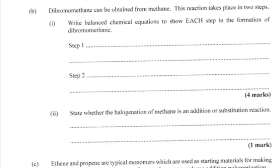We're at part B of number five, the organic chemistry section. The compound is dibromomethane — key thing here: 'di' means two, 'bromo' means bromine, and then methane. Dibromomethane can be obtained from methane. This reaction takes place in two steps, and we need balanced chemical equations to show each step in the formation of dibromomethane.